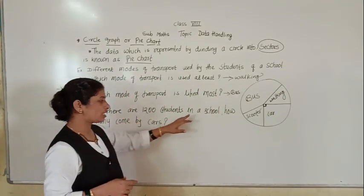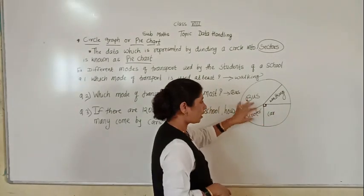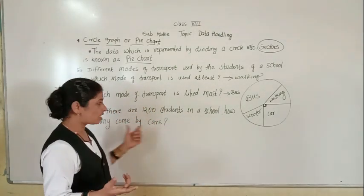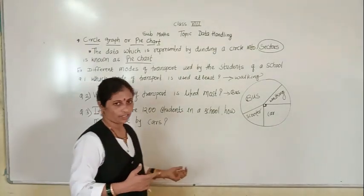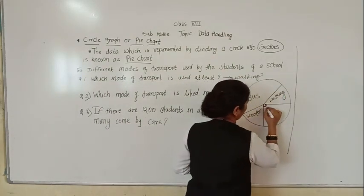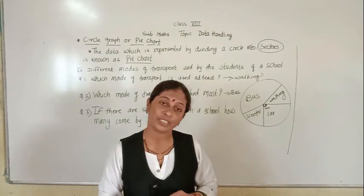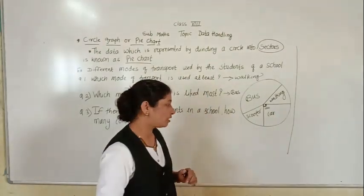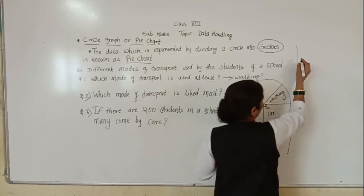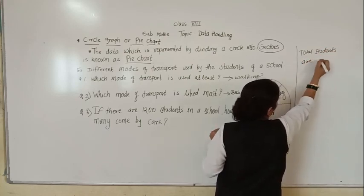If there are 1200 students in a school total, and they travel using these transport modes, how many students come by car? We can see the car sector has a 90-degree angle. Since the pie chart shows the relationship between a whole and its parts, we need to find how many students out of 1200 are represented by the 90-degree sector.